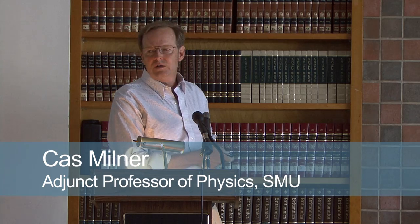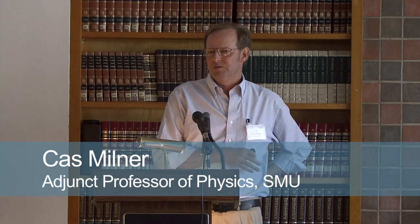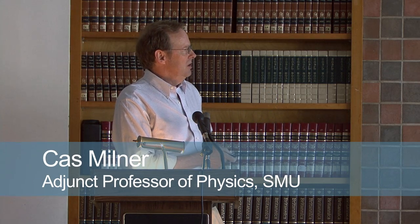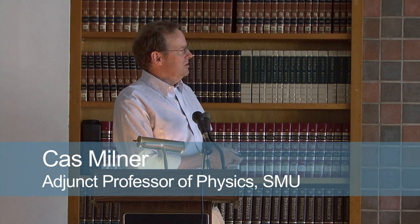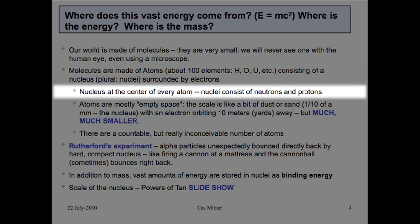We know that our world is made of molecules, but they're very small and none of us, unfortunately, will ever see one, even with using a microscope. The molecules are made of atoms, and there are about a hundred elements — hydrogen, oxygen, uranium, and so on — surrounded by electrons. There's a nucleus at the center of every atom, and that nucleus is composed of neutrons and protons.